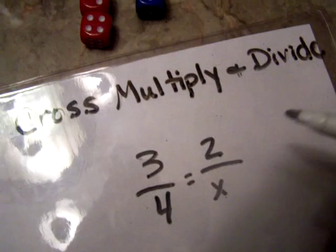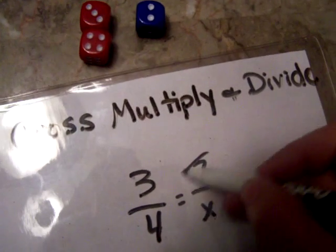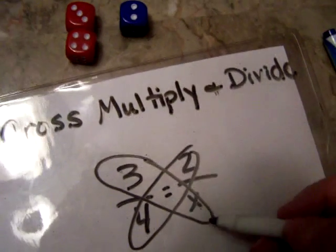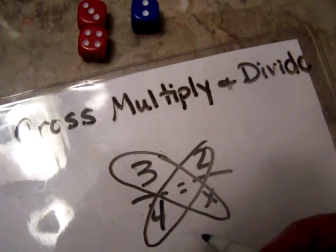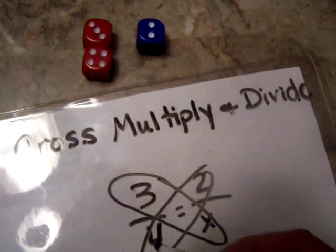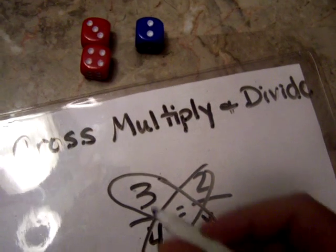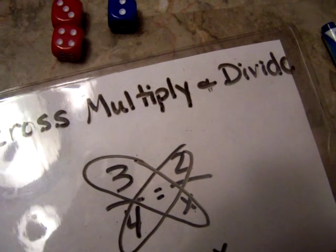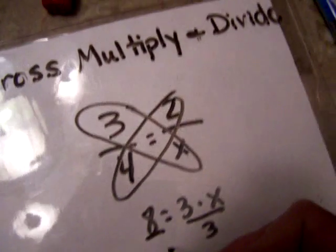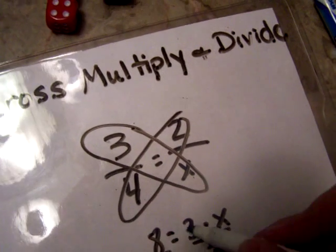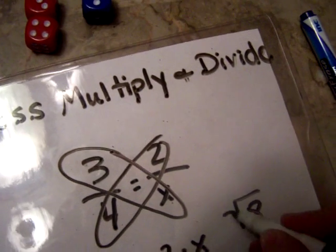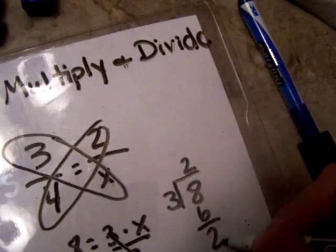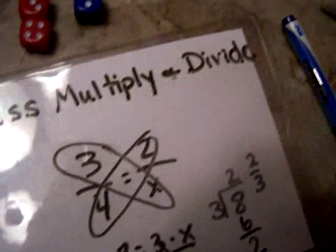And so you want to just cross multiply, which means four times two equals three times x. See how it looks like a butterfly? What you're actually doing is four times two is eight, and eight equals three times x. And then you divide each side by three.